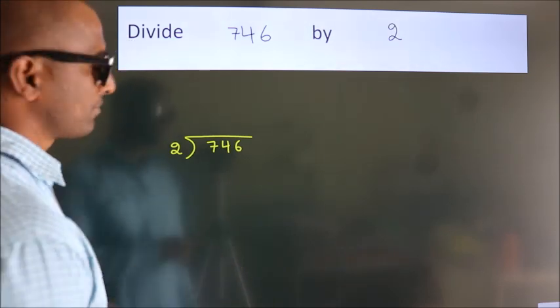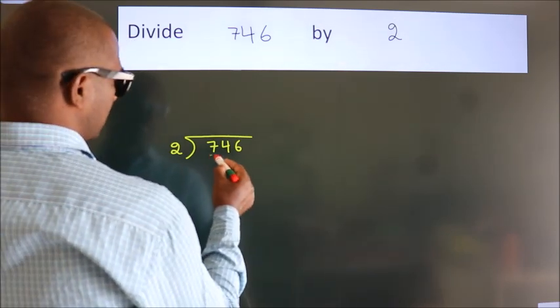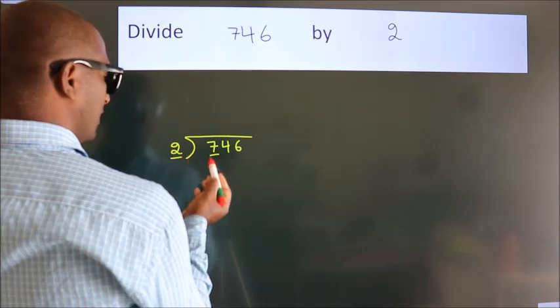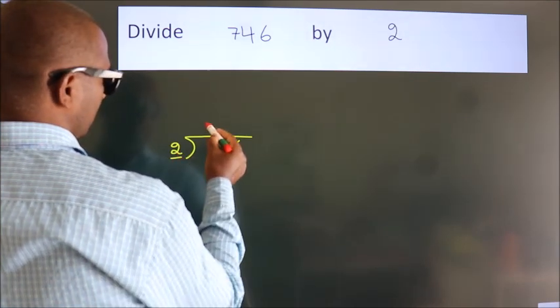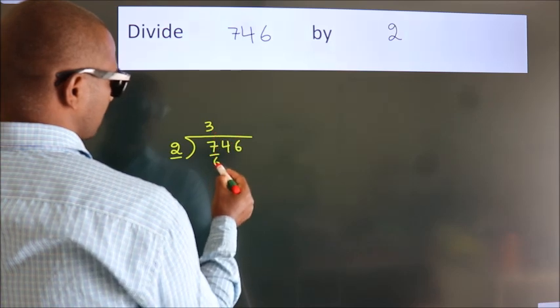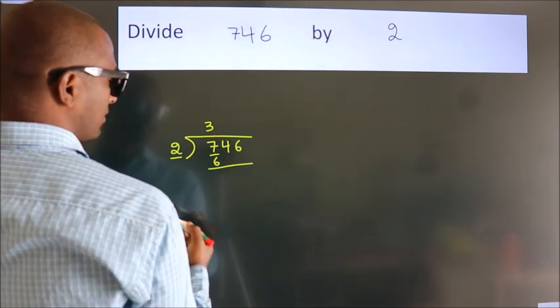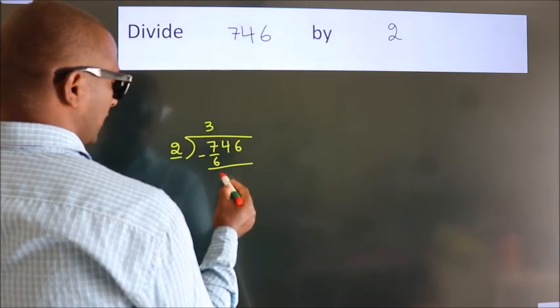Next, here we have 7, here 2. A number close to 7 in the 2 table is 2 times 3, 6. Now we should subtract. We get 1.